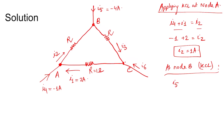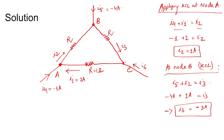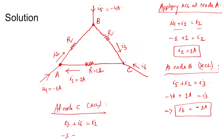At node B, applying KCL: i5 is entering and i2 is also entering node B, while i3 is leaving. i2 = 1 ampere and i5 = -4 ampere. Summing them up: i3 = i2 + i5 = 1 + (-4) = -3 ampere.